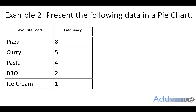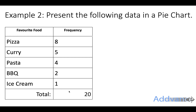Now we've got this chart and we're going to try and make a pie chart out of it. We've got 8 people who like pizza, 5 like curry, 4 like pasta, 2 like barbecues, and 1 person likes ice cream. If you add this up - 8 plus 5 plus 4 plus 2 plus 1 - there'll be a total of 20 people. So the total pie chart represents 20 people.